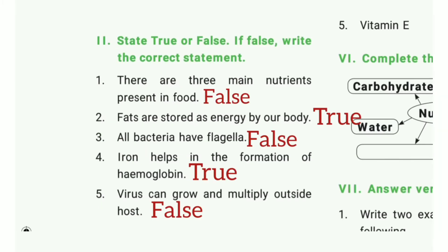State true or false. First one: there are three main nutrients present in food. The answer is false. Second one: fats are stored as energy by our body. The answer is true. Third one: all bacteria have flagella. The answer is false.